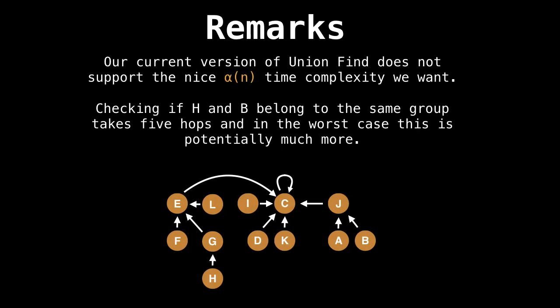But just as an example, if we need to check if H and B belong to the same group or a different group, it's going to take five hops in the worst case. And potentially much more. So H, we find the root node, which is C. And then we go from B and find the root node, which is also C. So this takes quite a few hops.